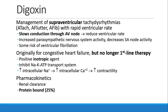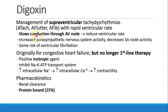Digoxin was originally used for congestive heart failure, and it's an inotropic agent, but it's no longer a first-line therapy. So if you see a patient who's taking digoxin, they're probably not taking it for heart failure anymore, rather for rate control of some supraventricular arrhythmia.